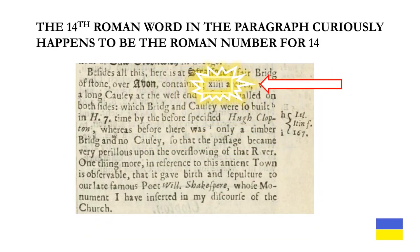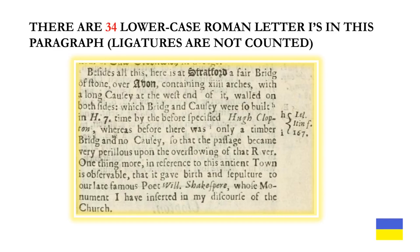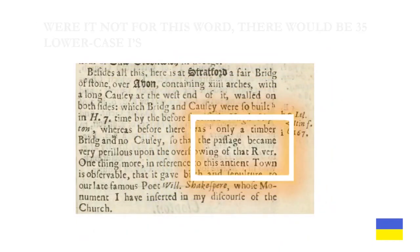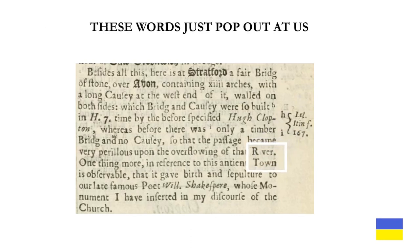Before we go, we note that the 14th Roman word in the paragraph curiously happens to be the Roman number for 14. There are 34 italic letters in the paragraph including the note. There are 34 lowercase Roman letter i's in the paragraph — we do not count the ligatures. Were it not for this word, there would be 35 lowercase i's.